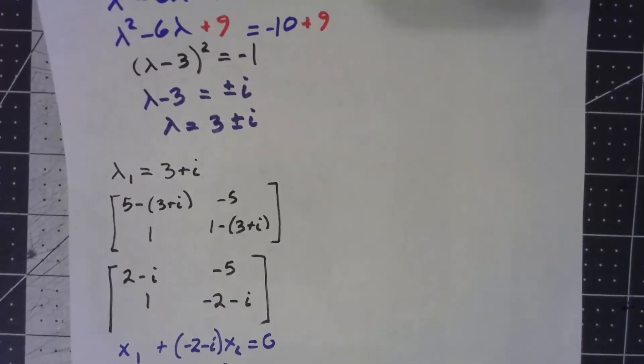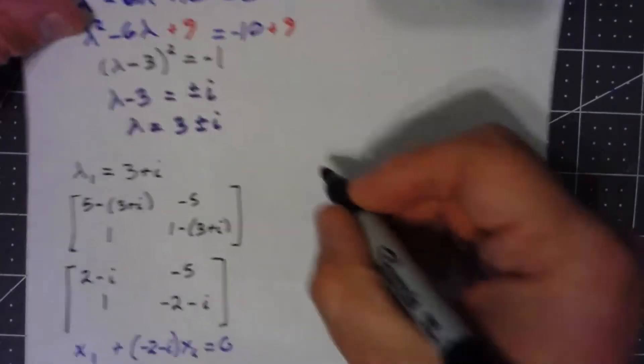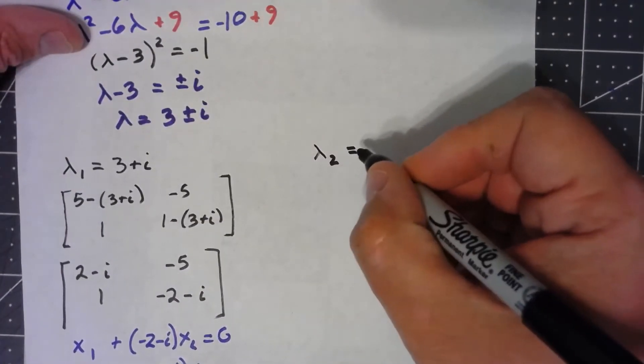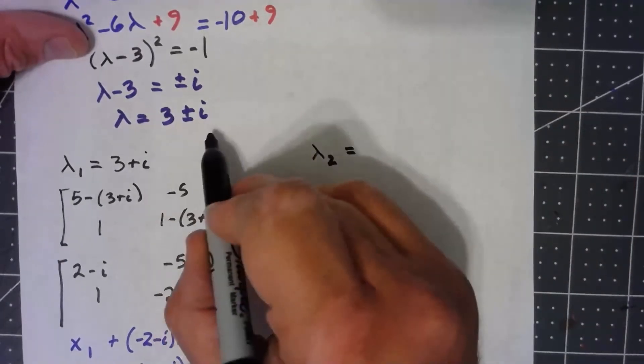Let's do the same thing for the other eigenvector, eigenvalue. So my second eigenvalue was 3 minus i.